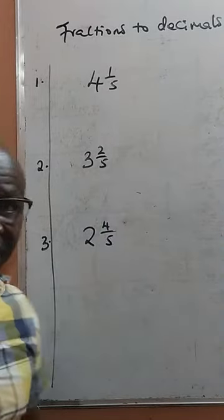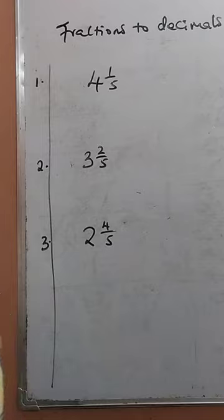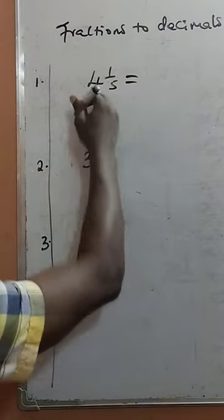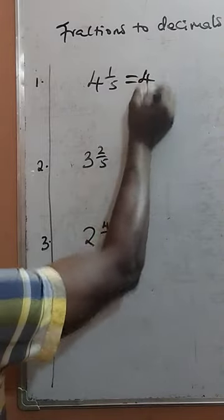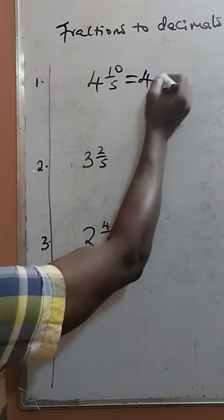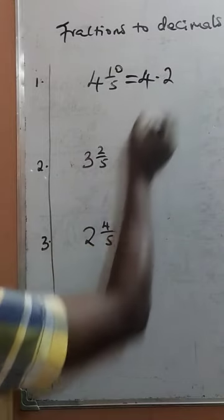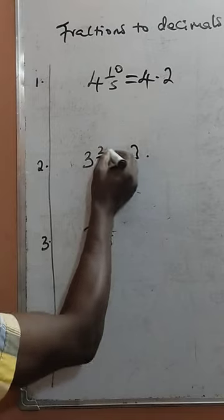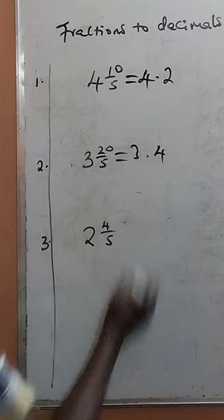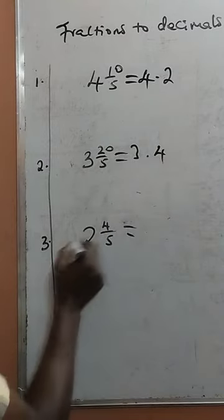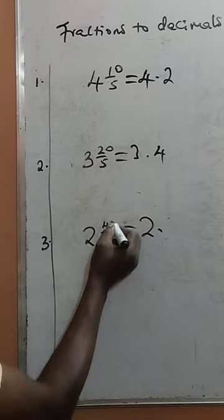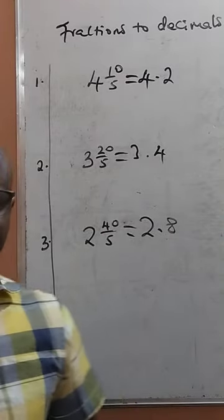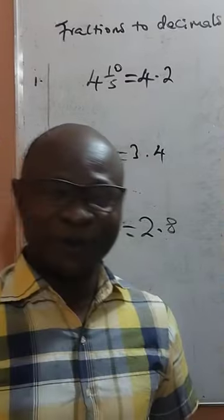Good fractions to decimals. Did your teacher tell you this? To convert fractions to decimals, just take down 4, add 0 here. 5 divided by 10 is 2, then here 3, put 3, then add 0 here. 5 divided by 30 is 4, put down 2, put your point, then add 0. 5 divided by 40 is 8. Did you get it? I hope you got it.